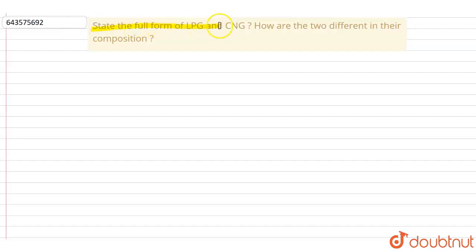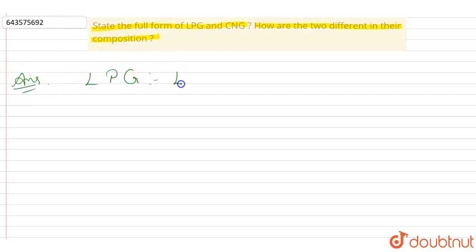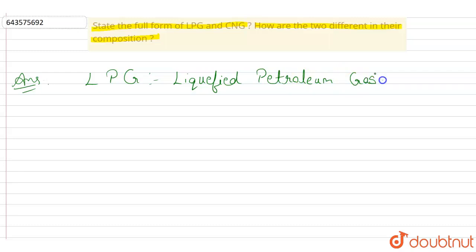State the full form of LPG and CNG. How are the two different in their composition? So let's see what LPG and CNG are. LPG is Liquefied Petroleum Gas and CNG is Compressed Natural Gas.